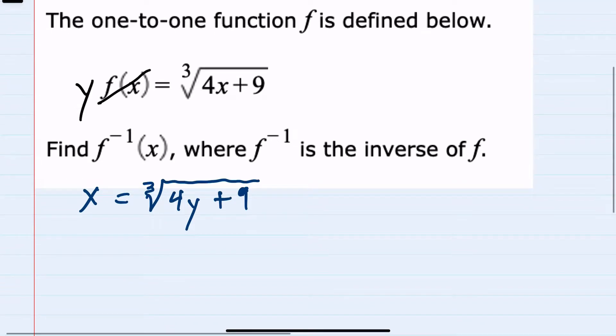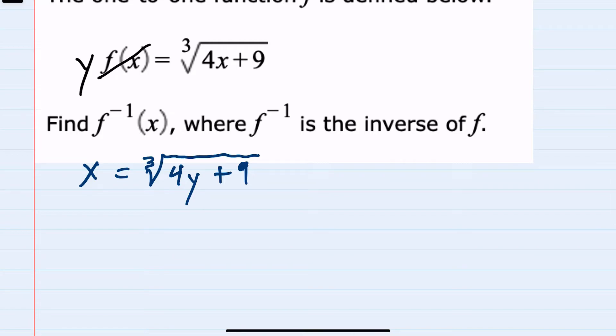So here solving for y I would start by cubing both sides of the equation. That allows me to cancel the cubed root and now have 4y plus 9 on the right hand side and x cubed on the left hand side.